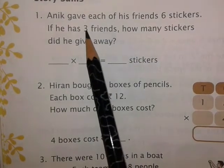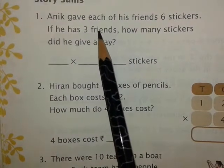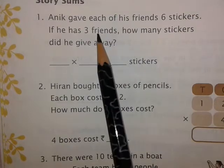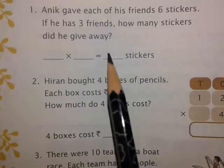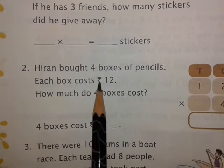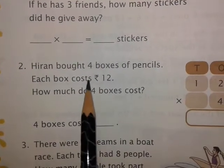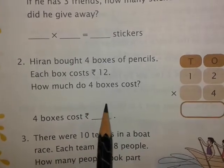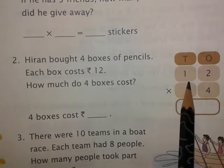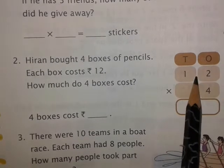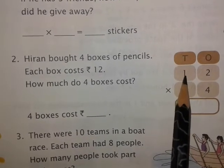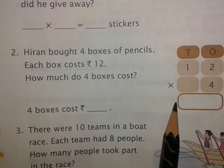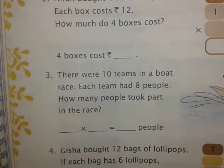You can do this by multiplying six with three. You know the table of both six and three, so it will be very easy for you to find out the answer. In question number two, the story is given and the numbers we have to use. If you have not memorized the table of 12 yet, you can multiply it in this way and find the answer.